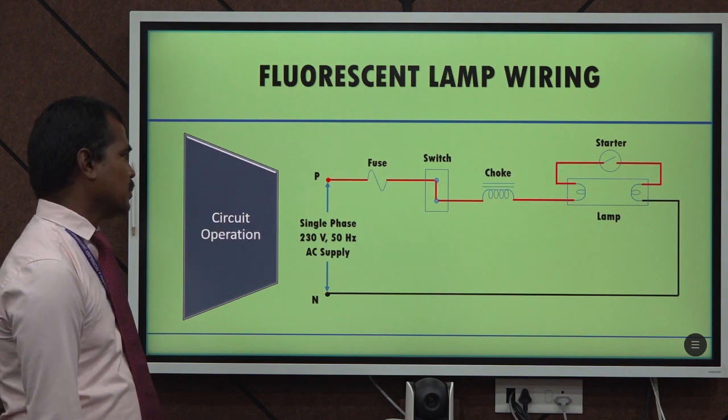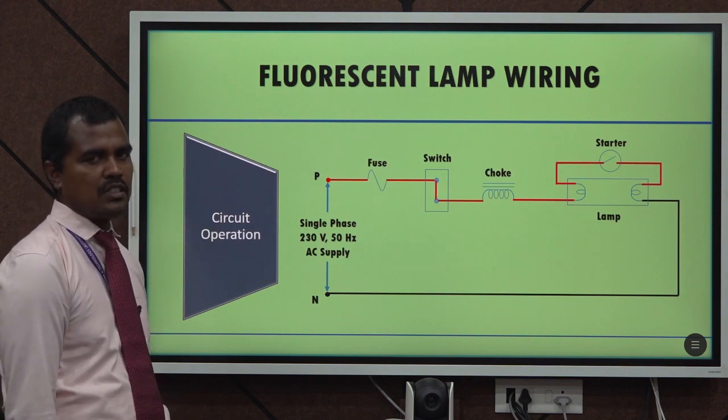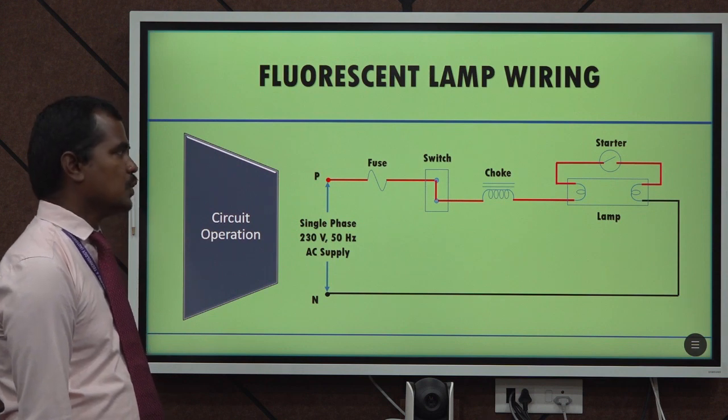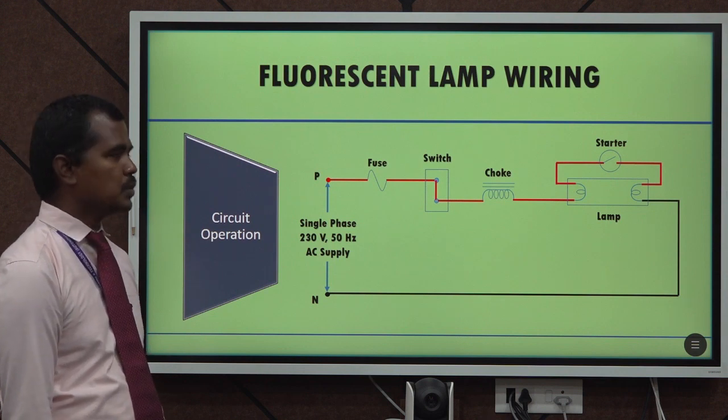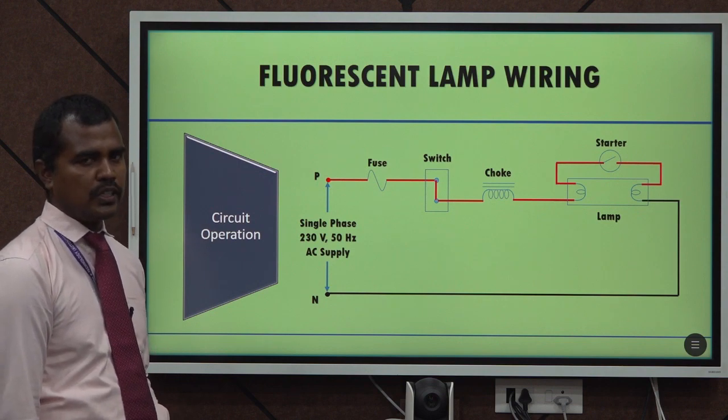Now let me explain the circuit operation. When the switch is closed, the circuit will close through fuse, switch, choke and starter through the neutral point.